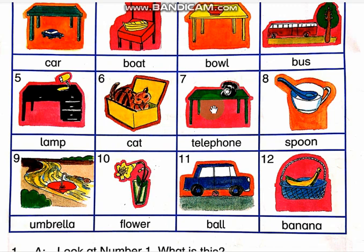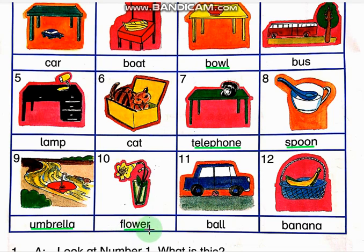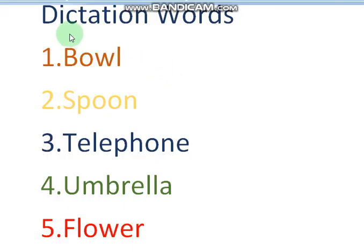Okay students, now we will do our dictation words. The first word is bowl — B-O-W-L, bowl. Second is telephone. Third is spoon. Fourth is umbrella — U-M-B-R-E-L-L-A, umbrella. Fifth is flower — F-L-O-W-E-R, flower. These are our dictation words.